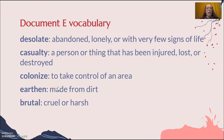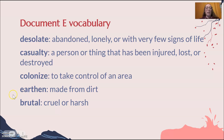There's some vocabulary you might want to refer back to — words we didn't define on our vocabulary page because we don't use them a lot, but they are used in this document. Desolate means basically like a desert. A casualty is a person or thing that has been injured, lost, or destroyed — generally thinking about a soldier who has died in war. Colonize is when somebody from somewhere else comes and takes control of an area, like Europeans colonizing the Americas. Earthen means made from earth or dirt. Brutal means cruel or harsh.